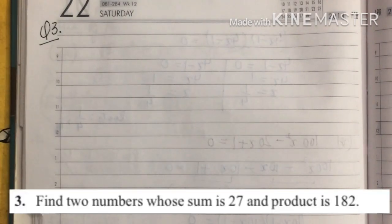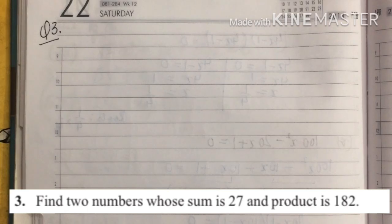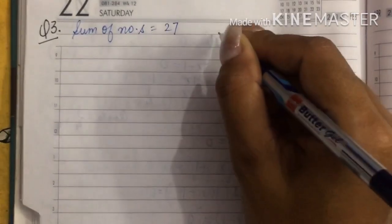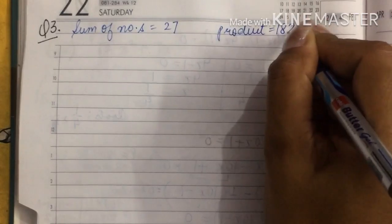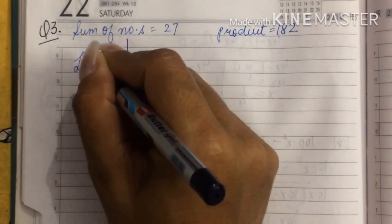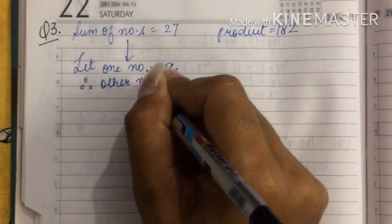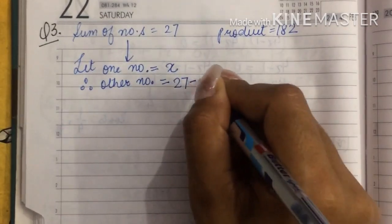Question number three: find two numbers whose sum is 27 and product is 182. You could start by taking two variables, or by assuming just one variable. Remember the quadratic equation you need to form should be in one variable. I have been given: sum of the numbers equals 27, product equals 182. From here, let one number equal x, therefore the other number will be equal to 27 minus x.